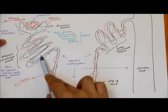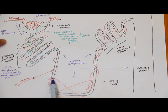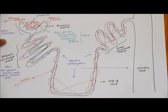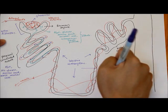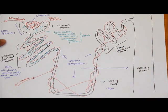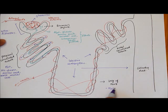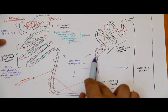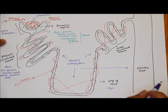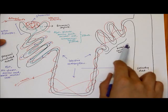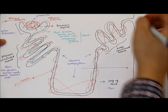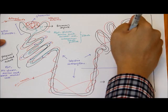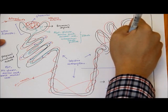The filtrate then continues to the loop of Henle, where remaining water that is needed is reabsorbed back. As the filtrate moves to the distal convoluted tubule, more reabsorption takes place if needed — water and mineral salts are reabsorbed here.